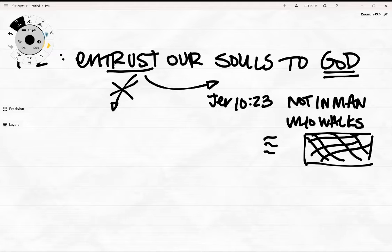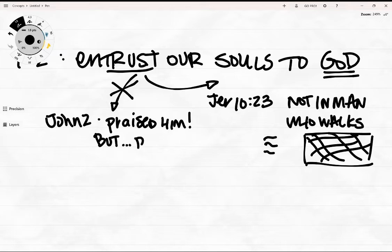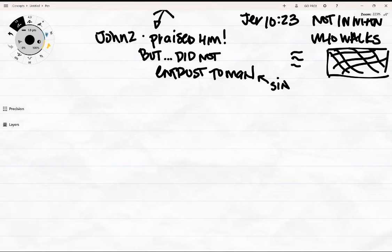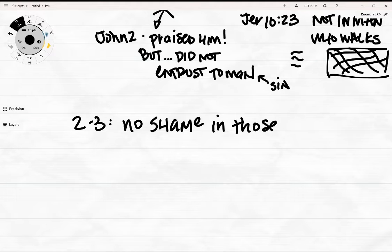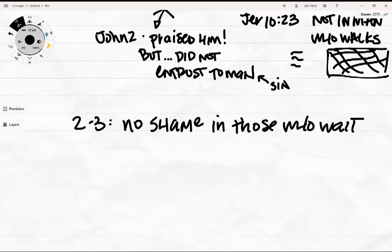Trusting God makes so much more sense than trusting in mankind. Jesus himself didn't entrust himself to people, even and especially when they were praising him. In John 2, the end, it says, Now when he was in Jerusalem at the Passover feast, many believed in his name when they saw the signs that he was doing. But Jesus, on his part, did not entrust himself to them, because he knew all people and needed no one to bear witness about man, for he himself knew what was in man. Verse 2 and 3. Let me not be put to shame. Let not my enemies exult over me. Indeed, none who wait for you shall be put to shame. They shall be ashamed who are wantonly treacherous.